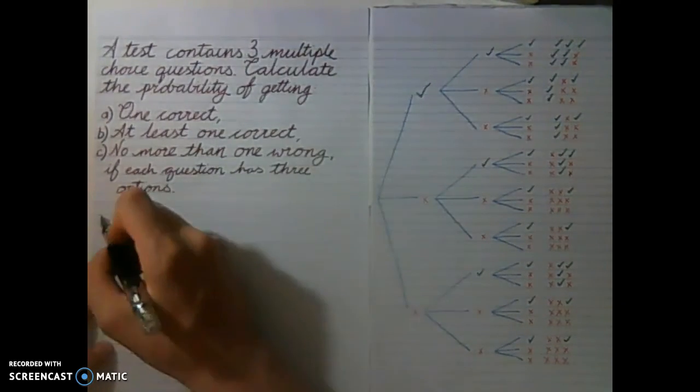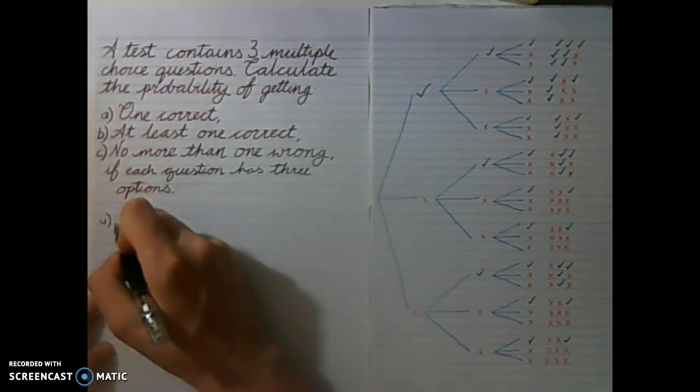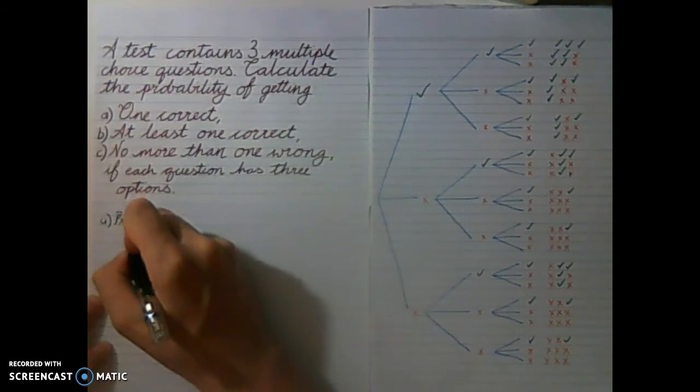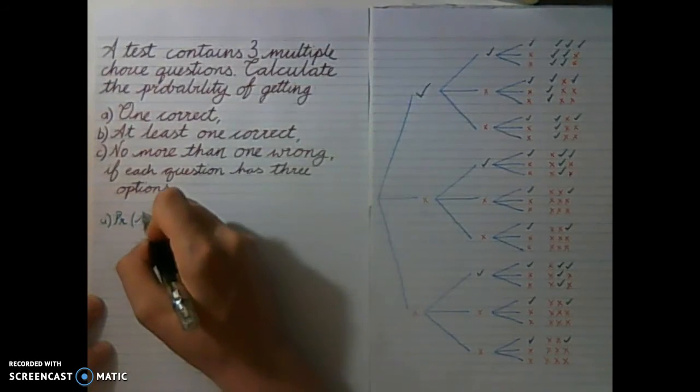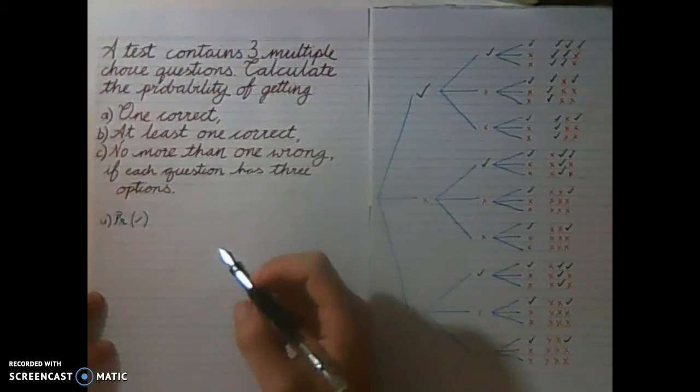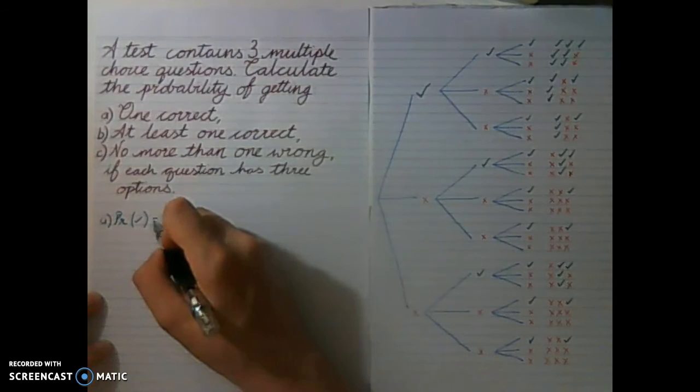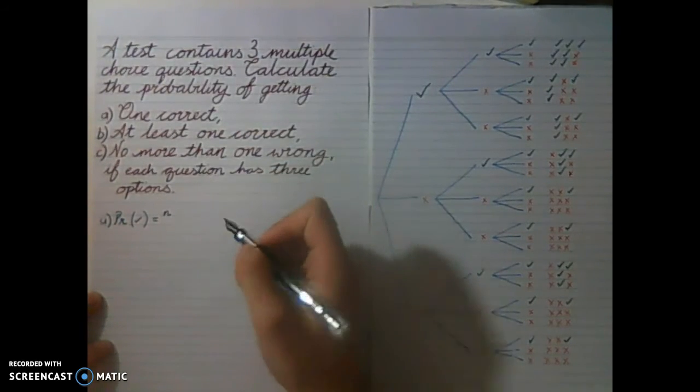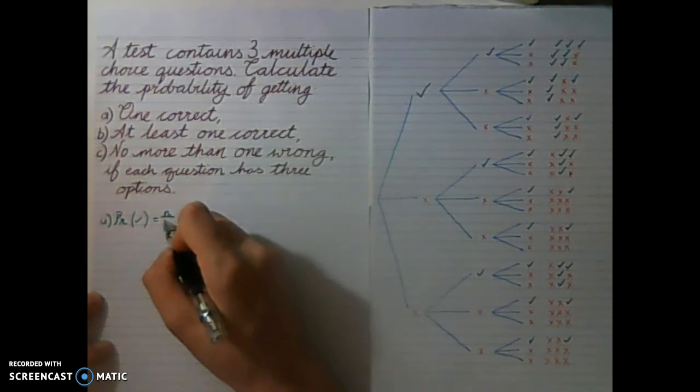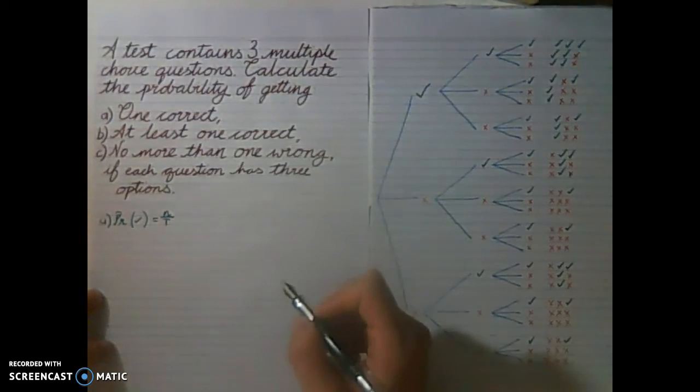So for the first question, we need to calculate the probability of getting one correct. Now the probability of any event is equal to the number of outcomes that fit our event over the total number of outcomes.